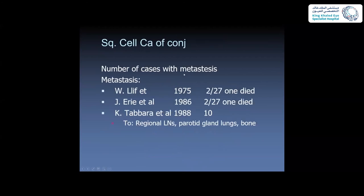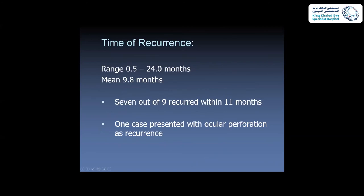OSSN does metastasize, though it is extremely rare, and this may indicate that the disease is more aggressive in some regions. Ten cases have been reported with regional and distant metastasis. Recurrences usually come within the first 24 months, most commonly in the first year — 9 of 11 recurrences occurred within 11 months — making close follow-up during the first year extremely important.